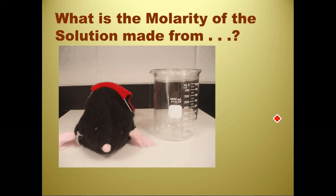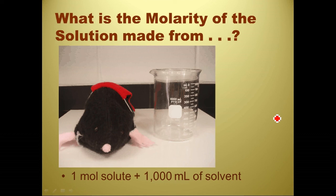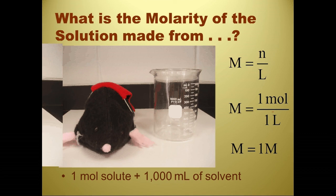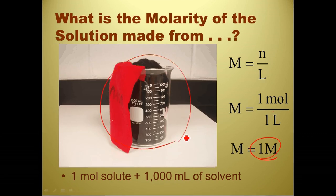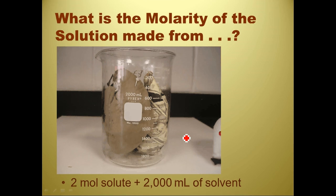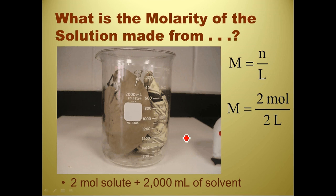If it's not given in moles, convert it. If it's not given in liters, convert it. Example: what's the molarity of a solution made from 1 mole of solute and 1000 milliliters of solvent? 1000 mL = 1 L, so molarity = 1 mol ÷ 1 L = 1 molar. Next: what's the molarity of 2 moles in 2000 milliliters? That's 2 mol ÷ 2 L = 1 molar. So there are multiple ways to make a 1 molar solution.